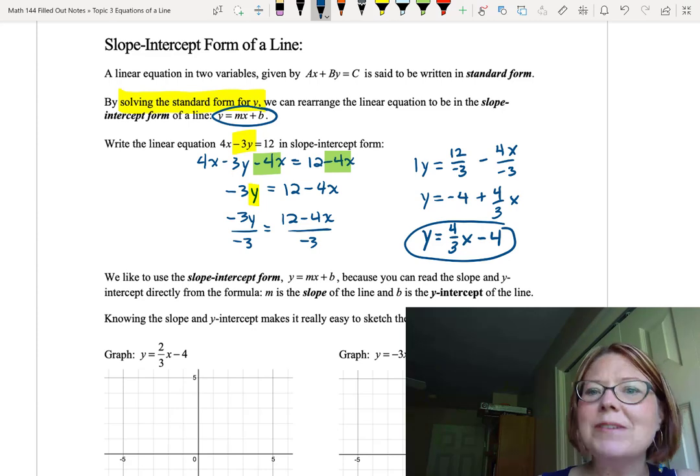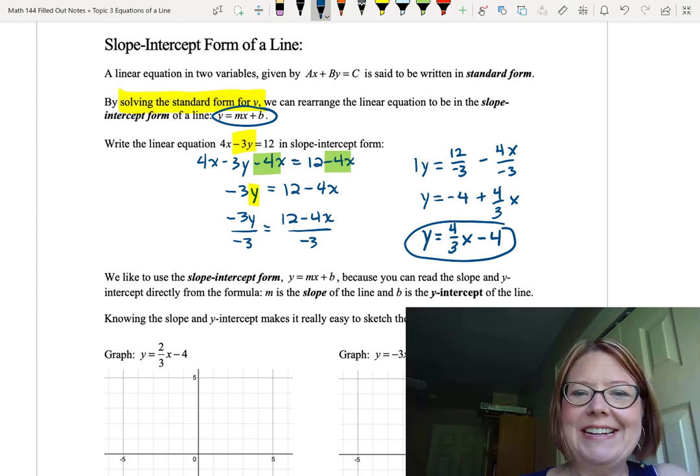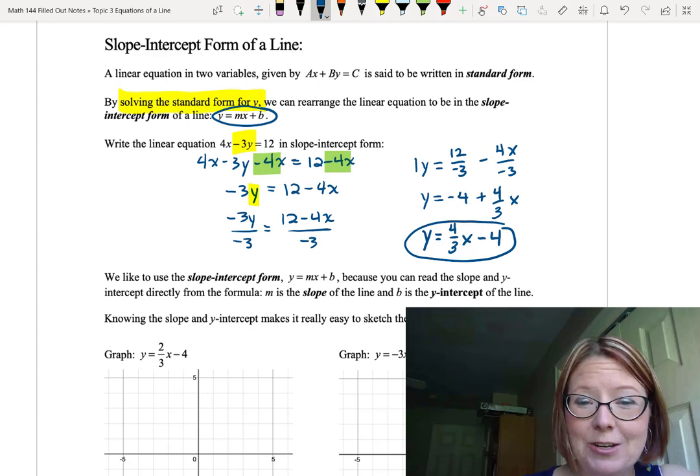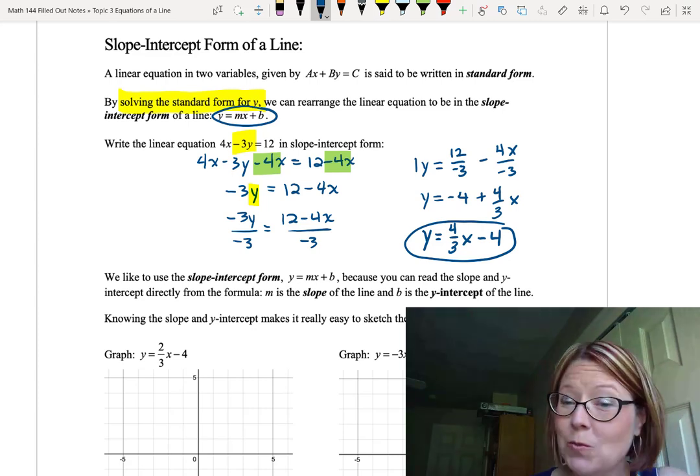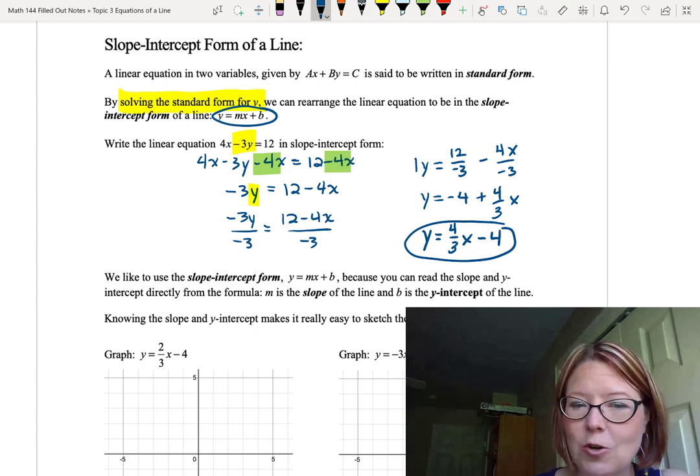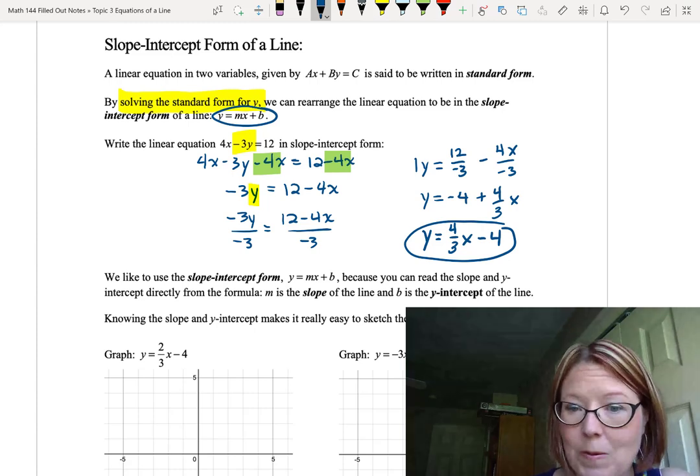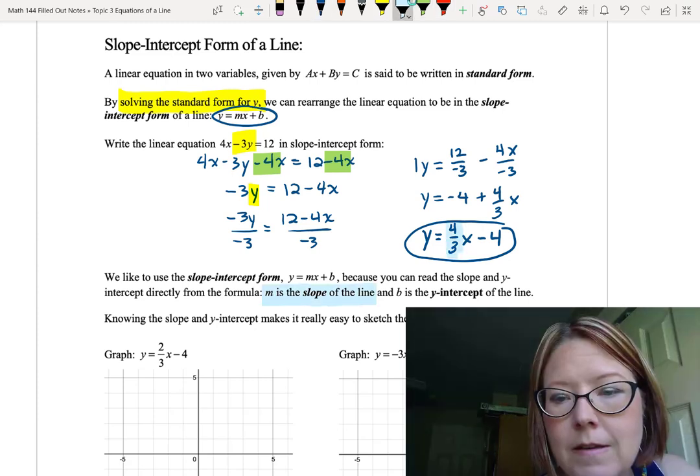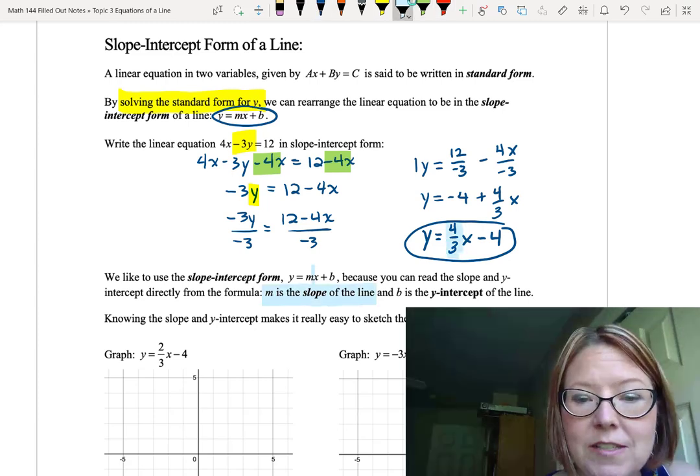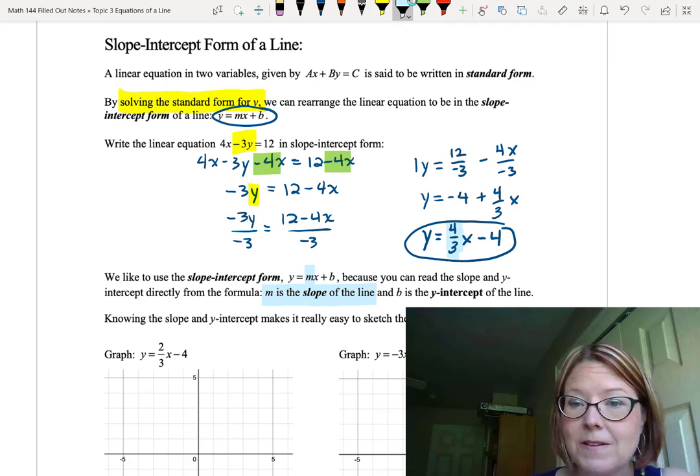You might think that was a lot of work, and all we've done is come up with a more complicated equation. But it turns out that this slope-intercept form is really useful, because you can read the slope and the y-intercept directly from the formula. m is the slope of the line. In this case, the m, which is the number before the x, is 4 thirds. So we know this line has a slope of 4 thirds.